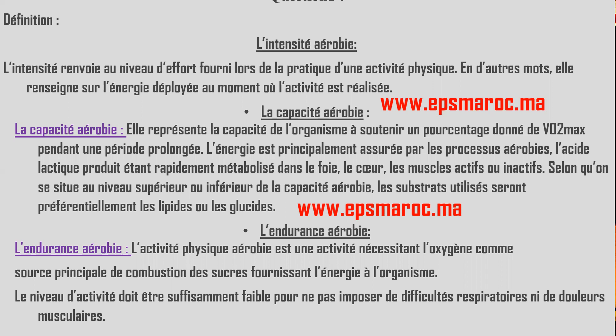L'énergie est principalement assurée par les processus aérobiques. L'acide lactique produit est rapidement métabolisé dans le foie, le cœur, les muscles actifs ou inactifs. Selon qu'on se situe au niveau supérieur ou inférieur de la capacité aérobique, les substrats utilisés seront préférentiellement les lipides ou les glucides. Pour l'endurance aérobique, l'activité physique aérobique nécessite l'oxygène comme source principale de combustion des sucres fournissant l'énergie à l'organisme. Le niveau d'activité doit être suffisamment faible pour ne pas imposer de difficultés respiratoires ni de douleur musculaire.